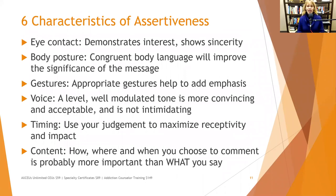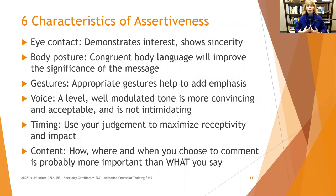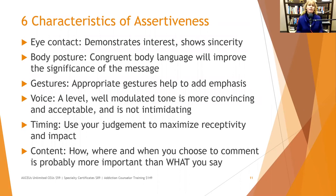Six characteristics of assertiveness: Eye contact demonstrates interest and shows sincerity — you don't want to look at the ground or, conversely, bore your eyes aggressively into the other person. Body posture: congruent, open body language improves the significance of the message — sitting open, leaning forward, squared off with the person. Even some cultures pay attention to which direction your feet are pointing. Gestures: appropriate gestures can add emphasis, like verbal bold, italics, and all caps.